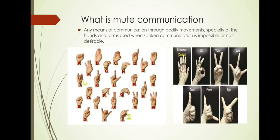First of all we see what is Mute Communication. It means communication through bodily movements, especially hands and arms used when expressing their feelings. These are the examples of Mute Communication, how they can express their feelings through sign language while communicating.